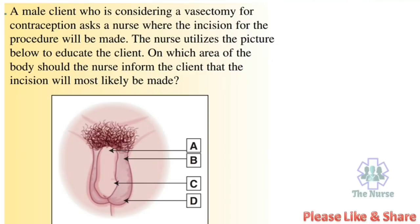Next question: A male client who is considering a vasectomy for contraception asks the nurse where the incision of the procedure will be made. The nurse utilizes a picture to educate the client. At which area of the body should the nurse inform the client the incision will most likely be made? Correct answer: Option B.